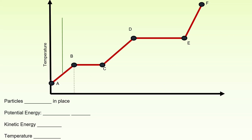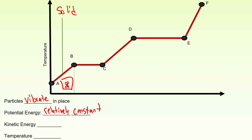So we're going to take a look at this first section, segment AB. What's going on here is we have only the solid phase present. The particles are vibrating in place — if I were to draw a particle diagram, they're all neatly arranged, not flowing past each other, just vibrating in place. The potential energy is relatively constant as we heat it up. Because temperature is average kinetic energy, as the temperature goes up, the average kinetic energy is also going up. So temperature also increases in section AB.